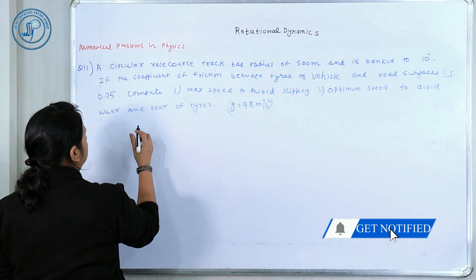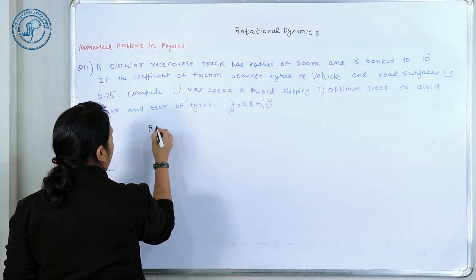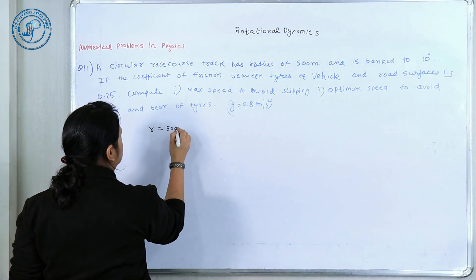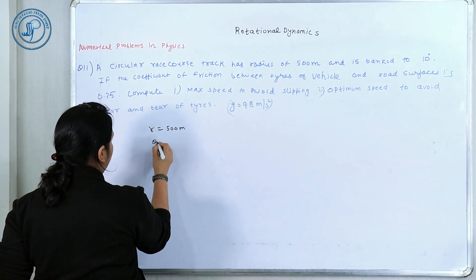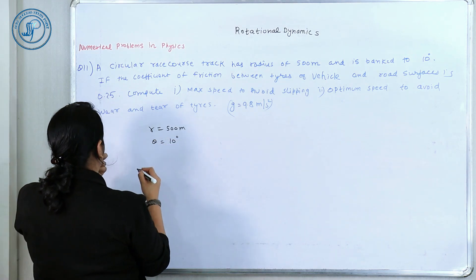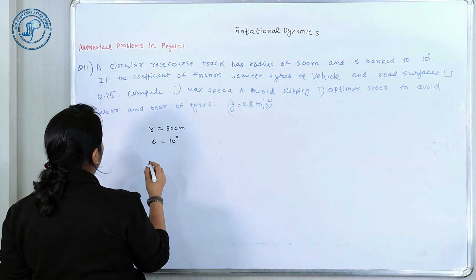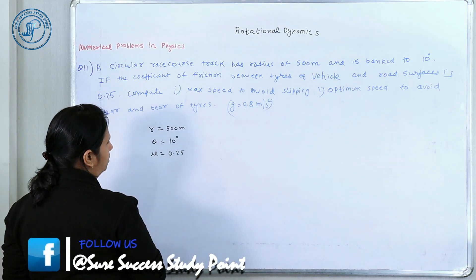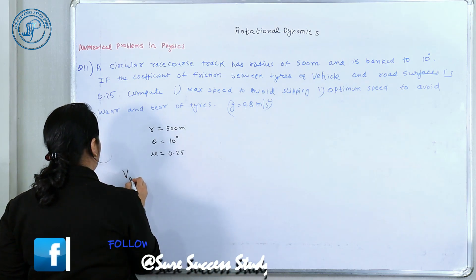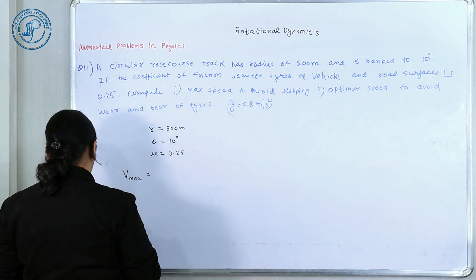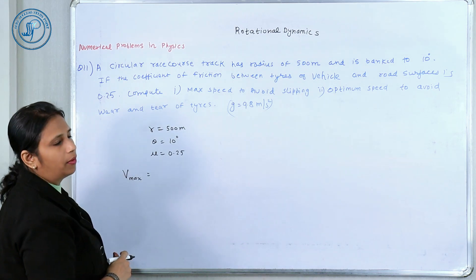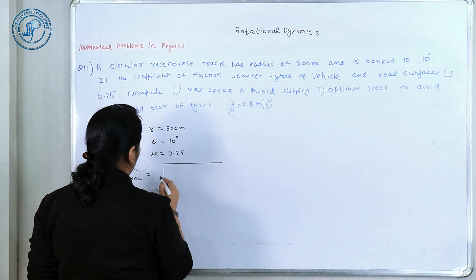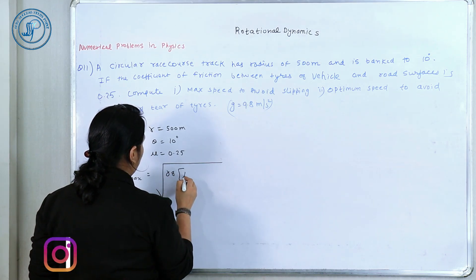What is given here? The radius of the track is 500 meters, angle of banking is 10 degrees, and the coefficient of friction between the road and the tire is 0.25. We have a formula for maximum speed to avoid slipping.